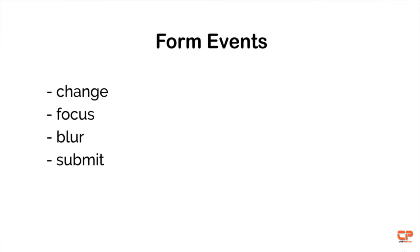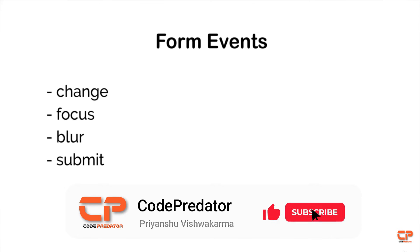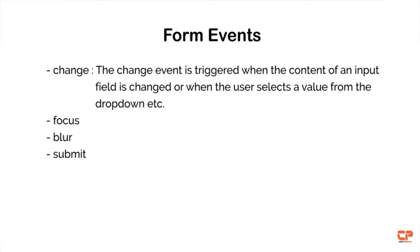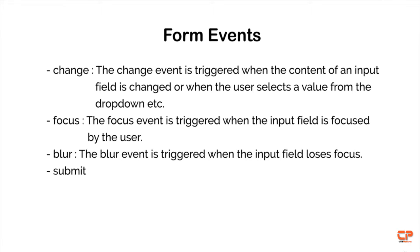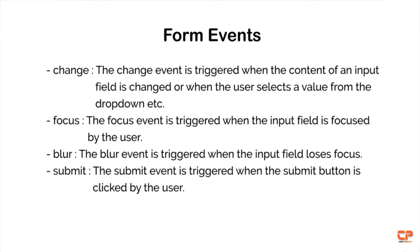Hi guys and welcome back to JavaScript Playground. In today's video we will talk about form related events. These are all the available form events: change, focus, blur, and submit. The change event is called when the content of an input element is changed, when the user selects a value from a drop-down, or selects a date from a date picker. The focus event is triggered when the input field is focused by the user. The blur event is triggered when the input field loses focus, and the submit event is triggered when the submit button is clicked.